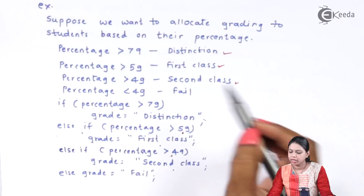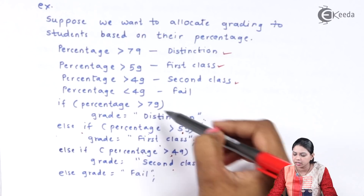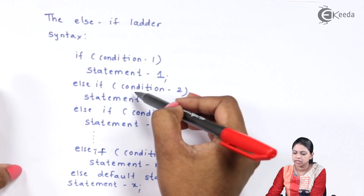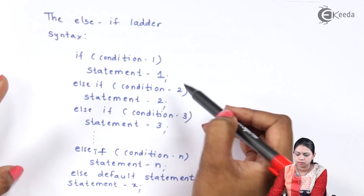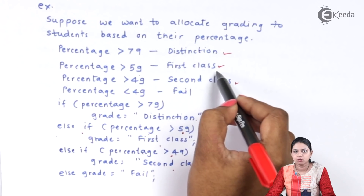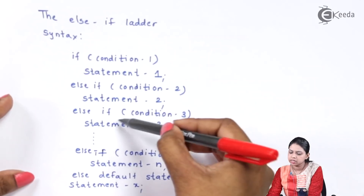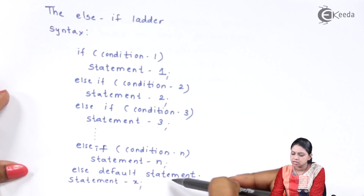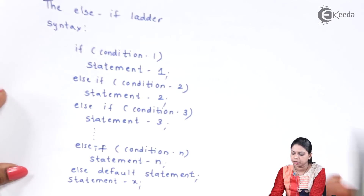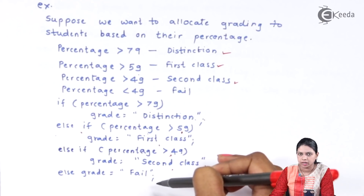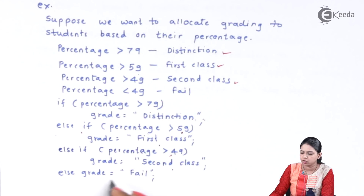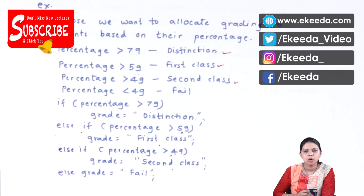I checked: if percentage is greater than 79, then distinction. Else if percentage is greater than 59, then first class. Then again else if percentage is greater than 49, then second class. And else, the default statement, which is fail. That is, if your percentage does not fall into any of these categories, your grade is fail. This is how we use the else-if ladder.